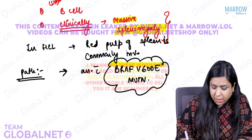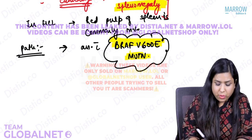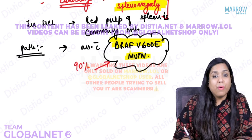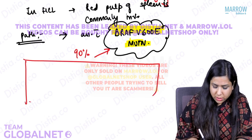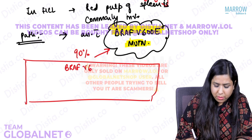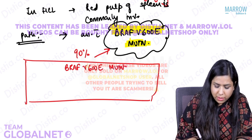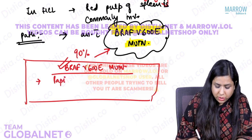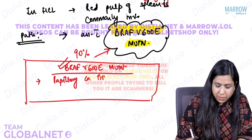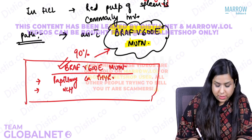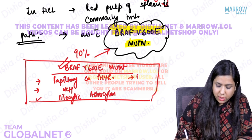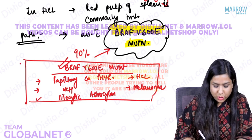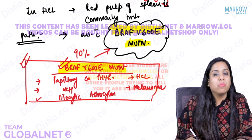Regarding pathogenesis, hairy cell leukemia is associated with BRAF V600E mutation in approximately 90% of cases. Other disorders with BRAF V600E mutation include papillary carcinoma of thyroid, Langerhans cell histiocytosis, pilocytic astrocytoma, and melanoma — an important list for MCQs.